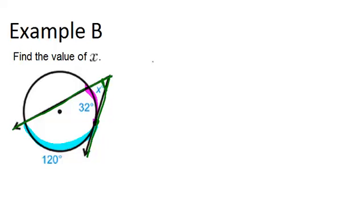minus the smaller arc of 32 degrees divided by 2 will give us our angle. So the equation here will be simpler than example A.